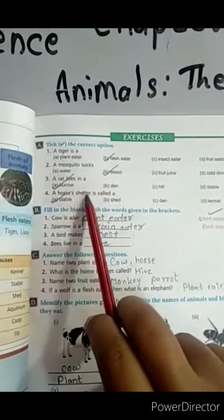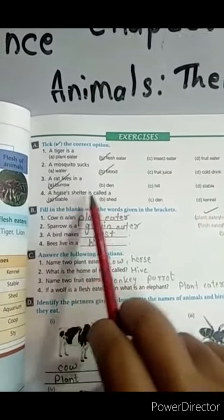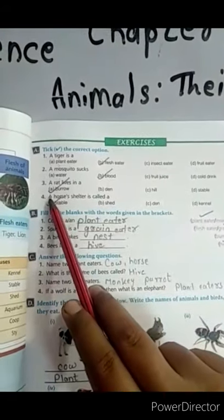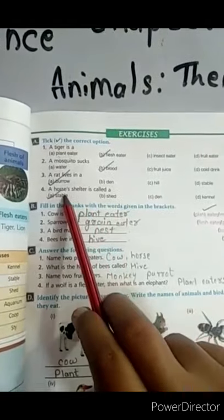A horse's shelter is called a stable, shed, den, or kennel. And the right answer is a horse's shelter is called a stable.